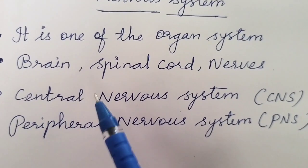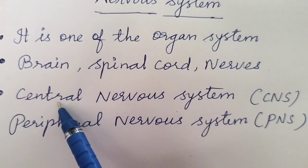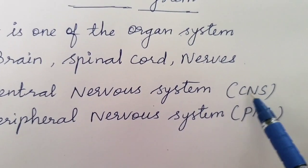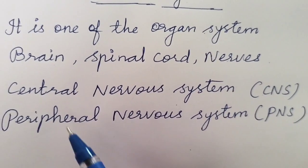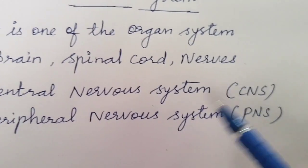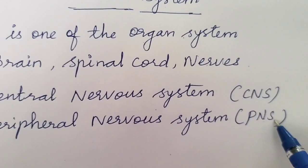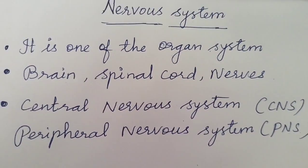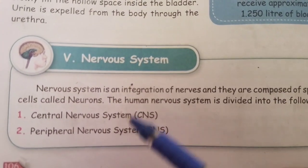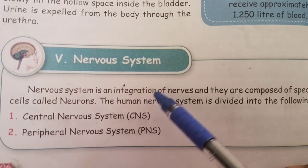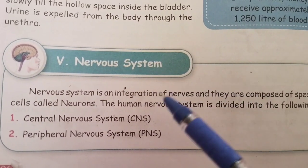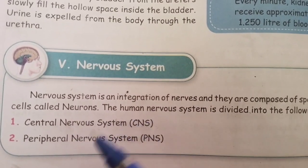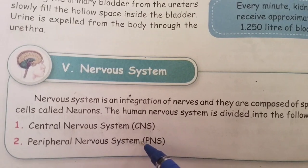The nervous system is divided into two parts: the central nervous system, shortly denoted as CNS, and the peripheral nervous system, shortly denoted as PNS.